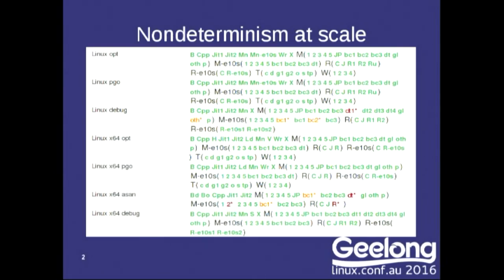The interesting thing is that this particular commit didn't actually change anything important in the code. So these tests that failed were basically intermittent test failures — tests that are just failing once in a while. There could be a bug in the test, a bug in Firefox, or an infrastructure problem. It's very difficult to figure out what the bug is when it only fails once in a hundred runs or once in a thousand runs. We see these kinds of bugs pretty often in our systems.